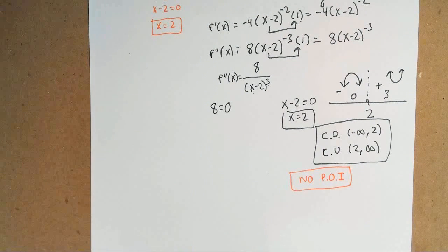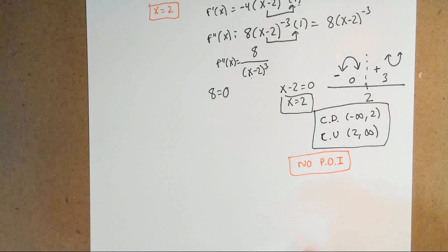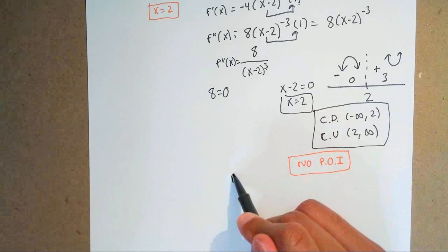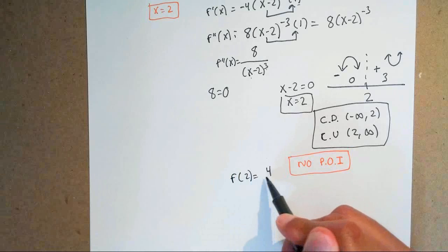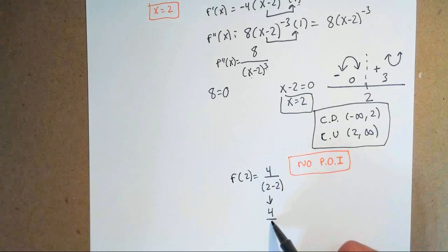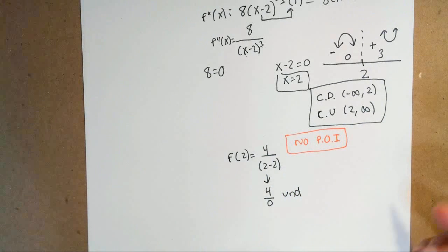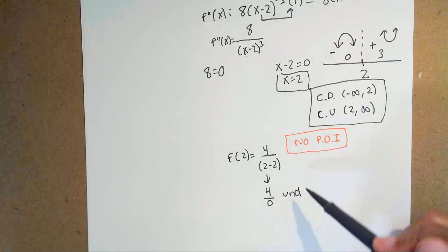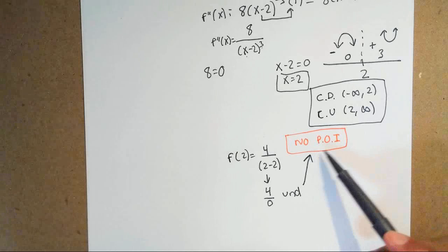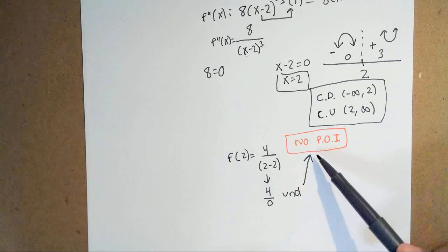In case you forget to check for a vertical asymptote, you can always try plugging that x value into your original equation. If you plug f(2) into 4 over (2 minus 2), you get 4 over 0, which is undefined. The second you get a number over 0, it's undefined, which confirms there is no point of inflection.